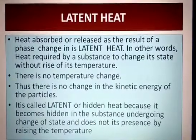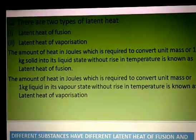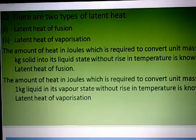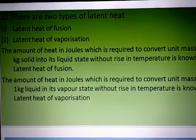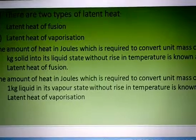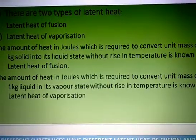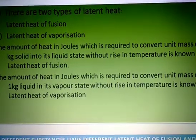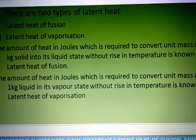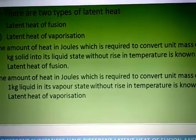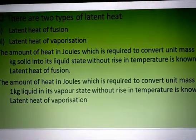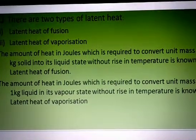Types of latent heat. There are two types of latent heat: first, latent heat of fusion, and second, latent heat of vaporization. The amount of heat in joules which is required to convert unit mass or 1 kg of solid into its liquid state without a rise in temperature is known as latent heat of fusion.